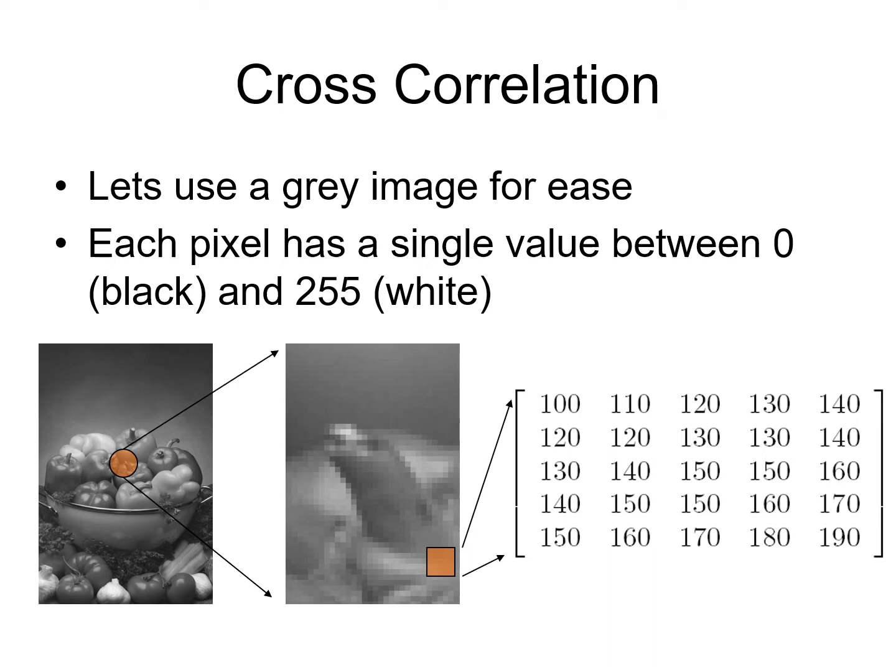We will study the algorithm for cross-correlation using a grayscale image. The grayscale image has values between 0 and 255. We will apply cross-correlation to an entire image, but for the purposes of this example we will apply it to a very small 5 by 5 subset of pixels from the image.